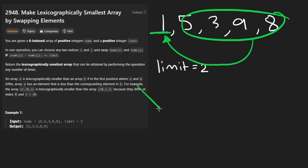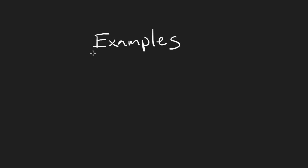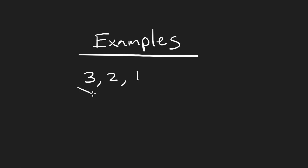I'll get into why with an example right now. I think this problem is a great showcase of why good examples can lead you to the optimal solution. So imagine if I had something like 3, 2, 1 — just sorted in descending order — and suppose I give a limit of one. I chose this intentionally. Would that naive greedy solution work? Could I just throw all elements into a heap and for the first position pick the minimum?